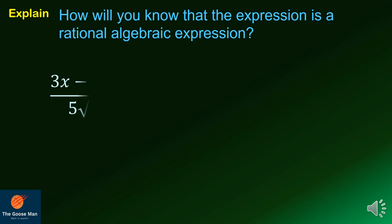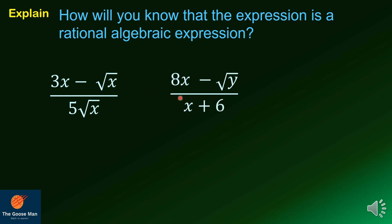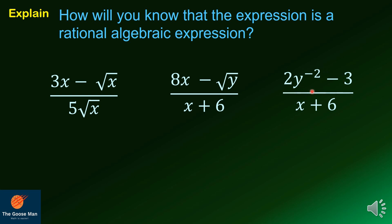However, if we consider the following items: 3x minus the square root of x all over 5 times the square root of x is not a rational algebraic expression because the variable x is inside the radical symbol. Also, 8x minus the square root of y all over x plus 6 is not a rational algebraic expression because y is inside the radical symbol. Likewise, 2y raised to negative 2 minus 3 all over x plus 6 is not a rational algebraic expression because y has a negative exponent.